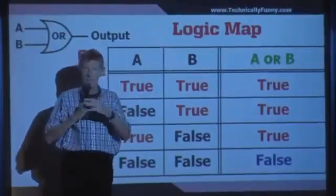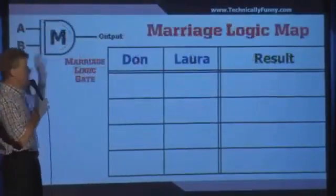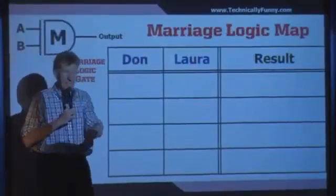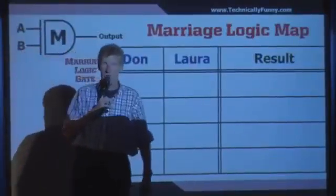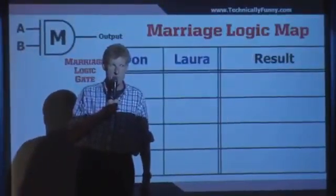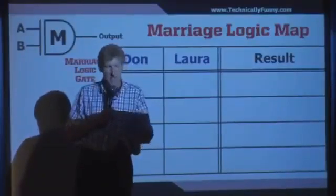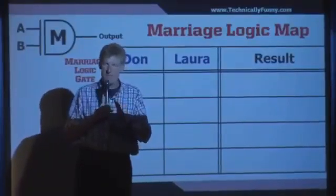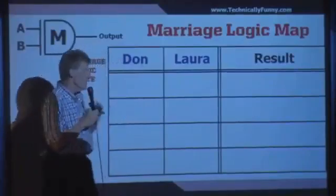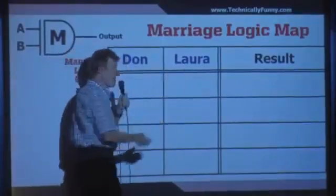But I've come up with the marriage logic map — this is the key to happiness. And these ladies down there went, we don't like where this is going. I'm going to preface this by saying — well, I'll get to it. I started with the most obvious thing: there's two inputs, Don and Laura. It's my wife, Laura.